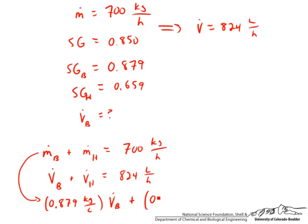We can multiply the density of hexane, 0.659 kilograms per liter, times the volumetric flow rate of hexane. That again is equal to 700 kilograms per hour. Now we have two equations and just two unknowns.